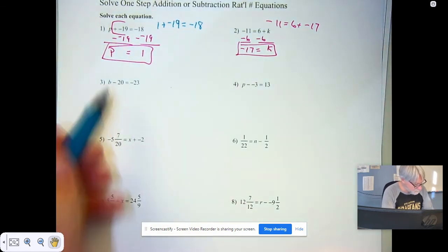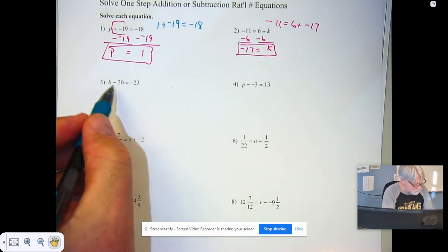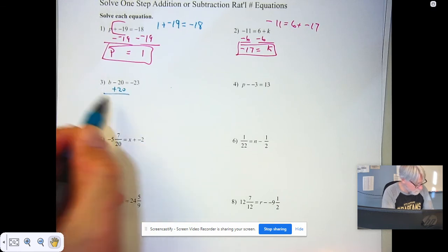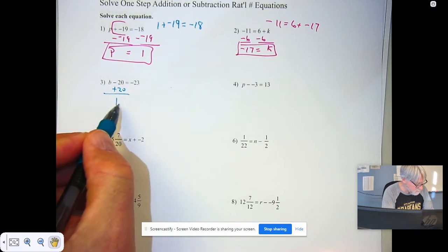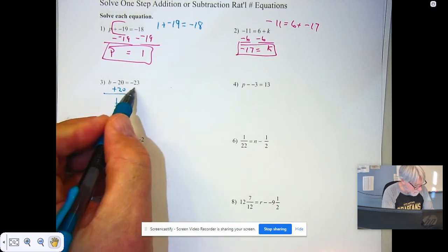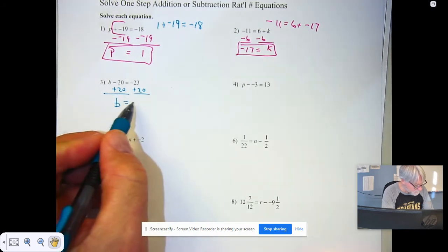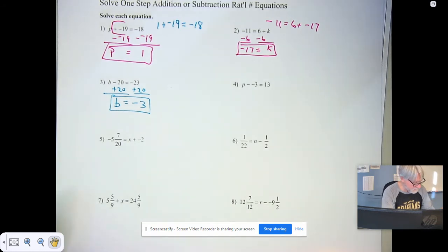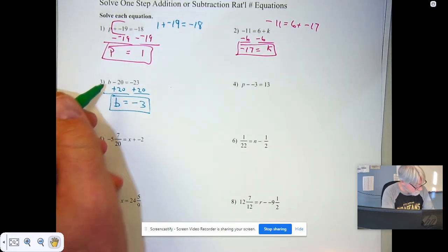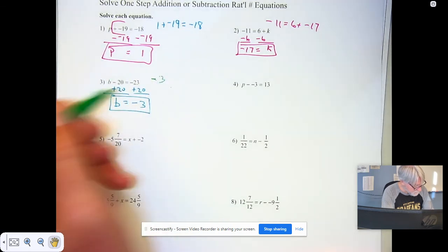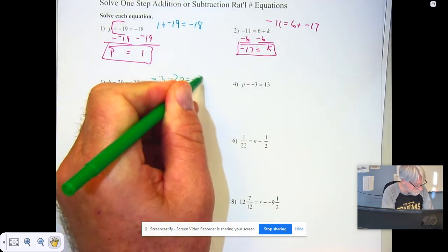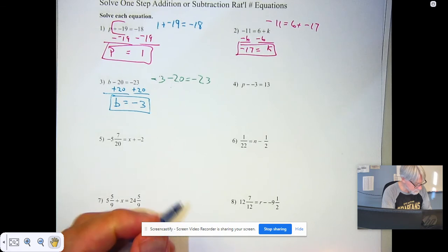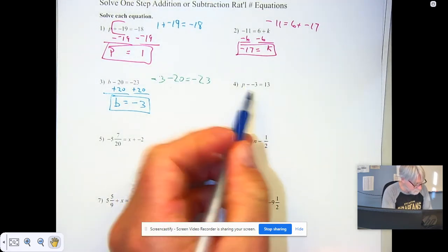Identify the variable b. See the operation, do the opposite. So instead of subtracting 20, add 20. Minus 20 and plus 20 is 0, b plus 0 makes 0. Add 20 to negative 23, you get negative 3. Use your calculators to do the calculating. Negative 3 minus 20 equals negative 23. Do the checks, at least mentally if nothing else.